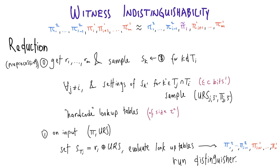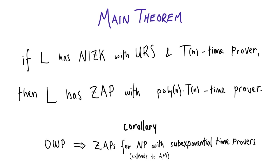That completes the proof. This simple transformation using the old idea from derandomization gives us a tight way of preserving the prover's running time in a transformation related to that of Dwork and Naor — and this immediately gives us ZAPs from one-way permutations.